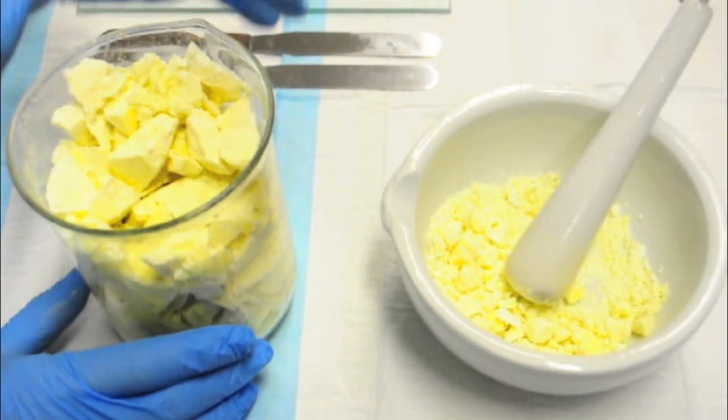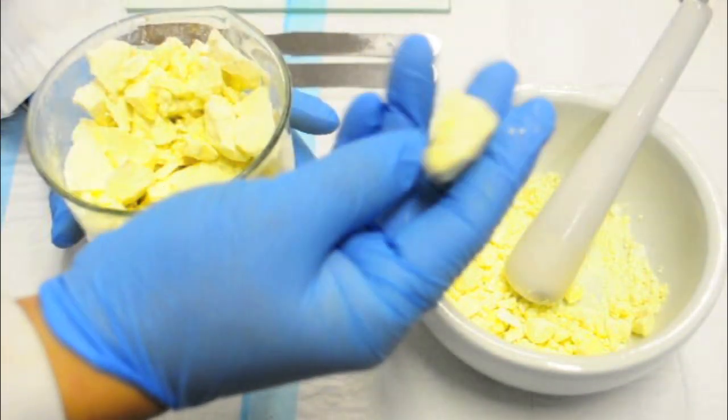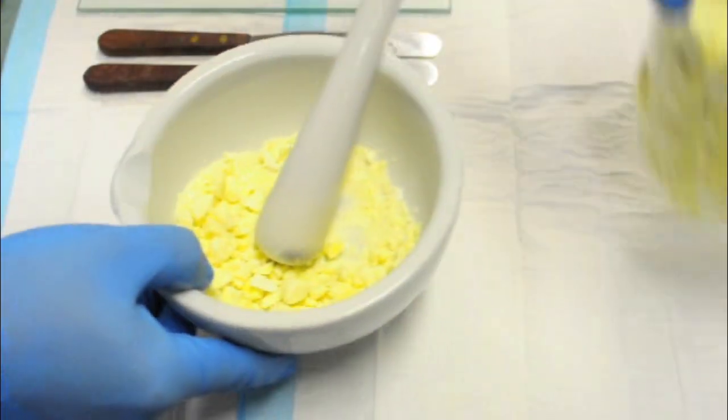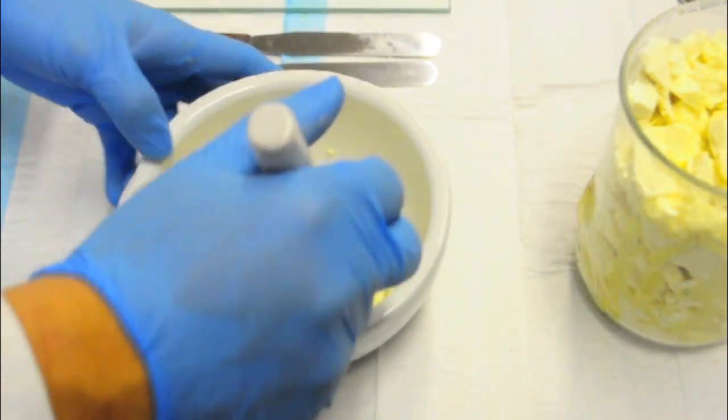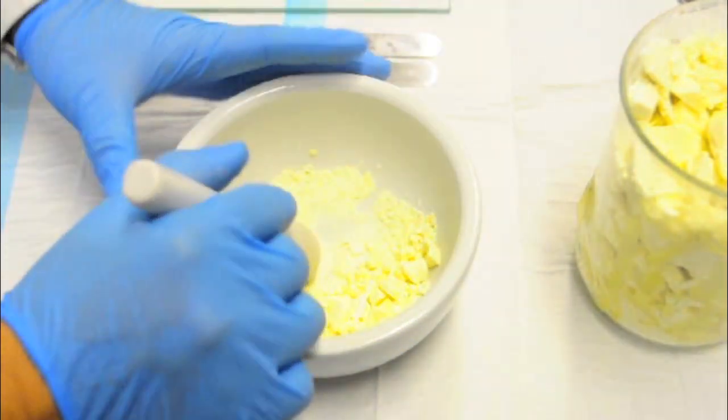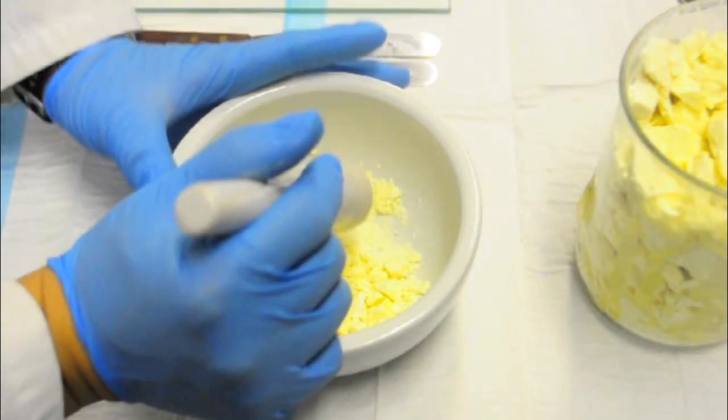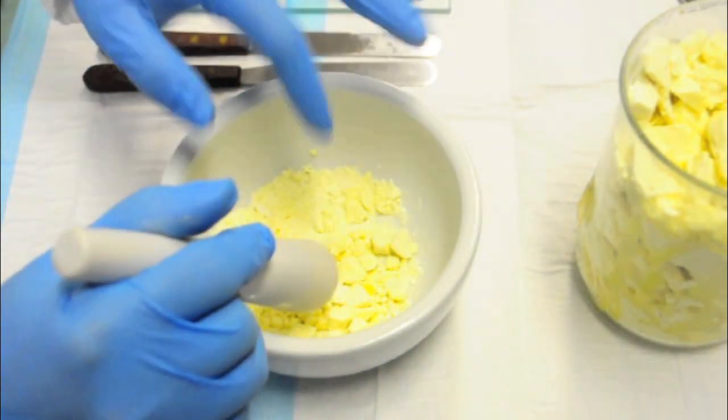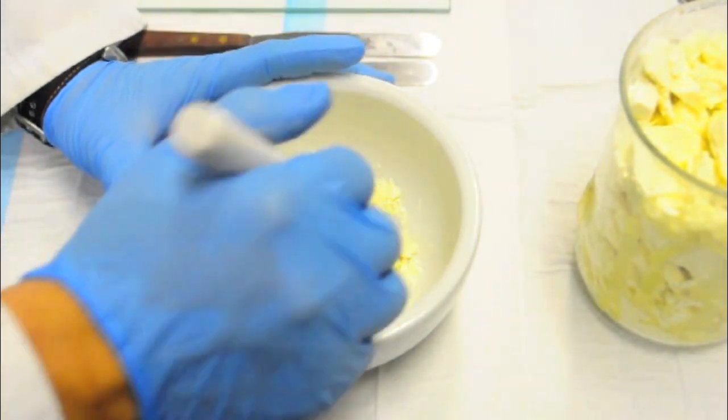The next ingredient we have is theobroma oil or we call it cocoa butter. It comes in this sort of quite big chunk. So what we need to do first is actually to grind it down to fine particles like about this fine here. The reason is to make sure that there's even heating later when we are going to melt it down. If you actually have big pieces, the big pieces will not melt that fast whereas the smaller pieces will melt and create a situation where there's uneven heating.